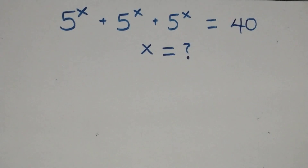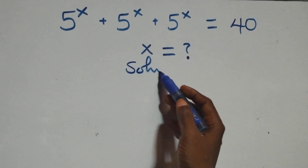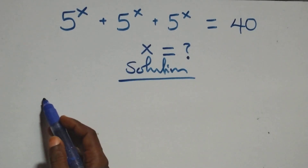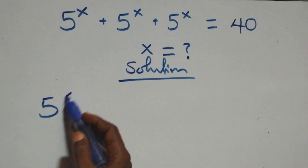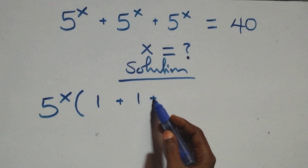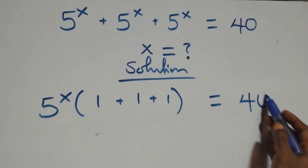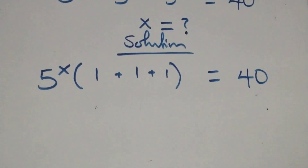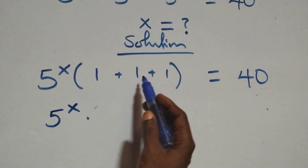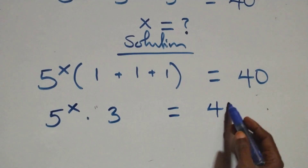Hello, you are welcome. How to solve this equation. We factor 5 raised to power x out, giving 5 raised to power x into brackets: 1 plus 1 plus 1 in brackets equals 40. This becomes 5 raised to power x times 3 equals 40.